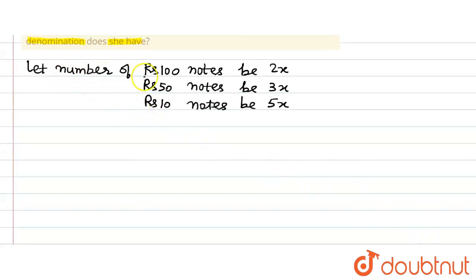What we are given is the total amount she has is equal to 4 lakh, 400000, and where is it coming from? It is coming from 2x notes of 100 that means